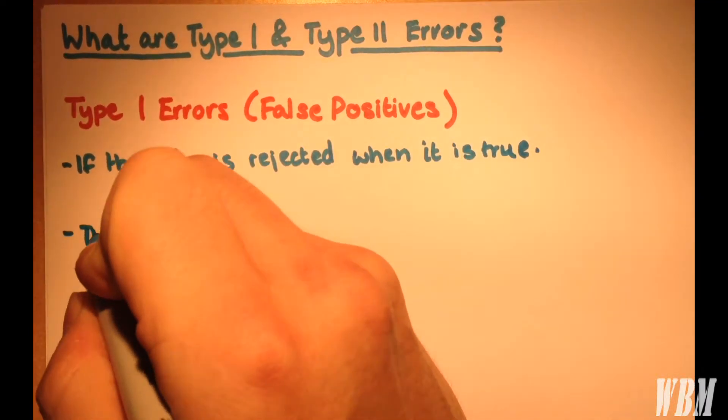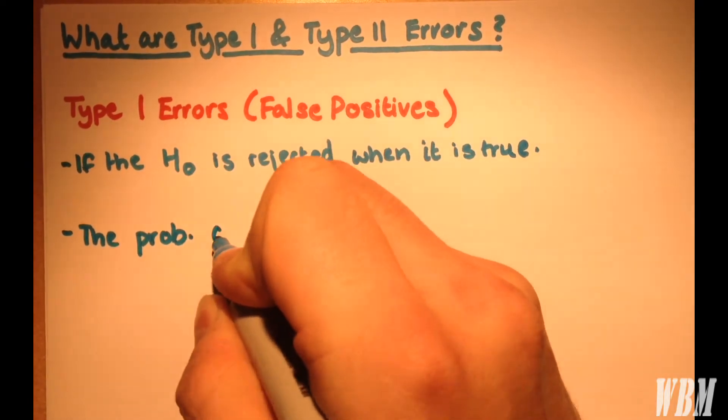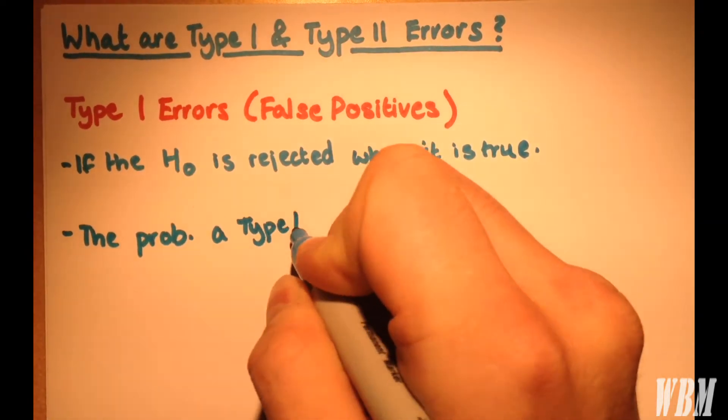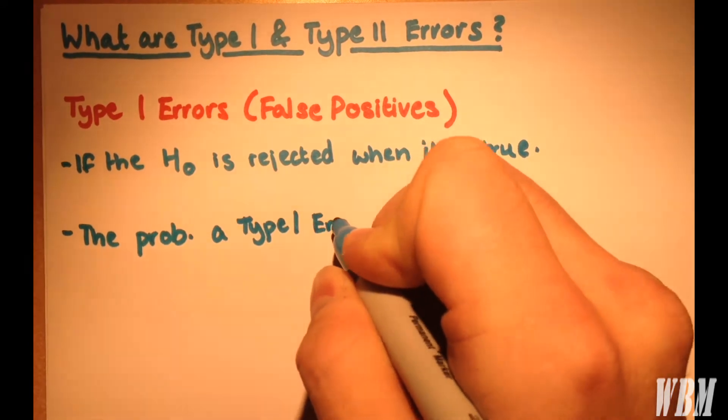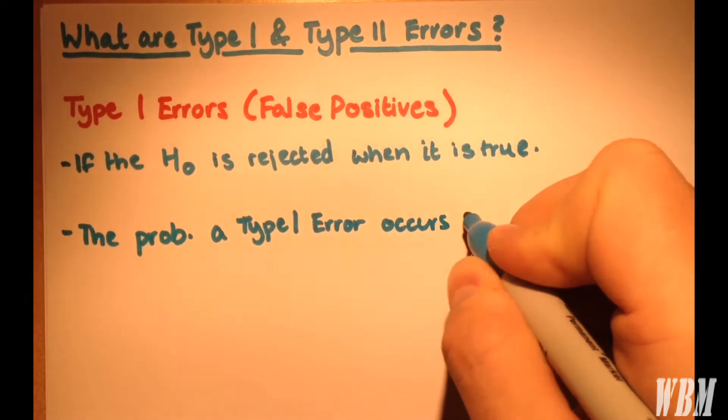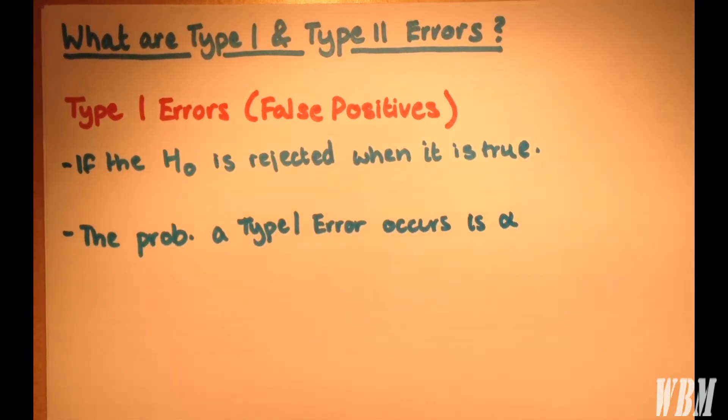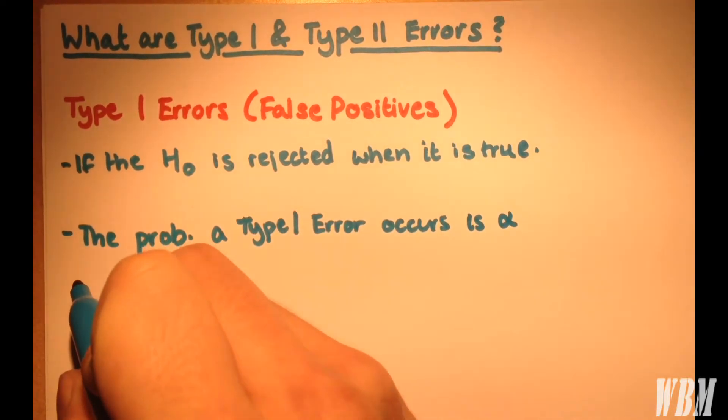The probability that a Type 1 error will occur we refer to as alpha, which you'll notice is the significance level.